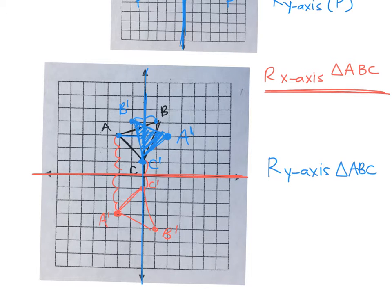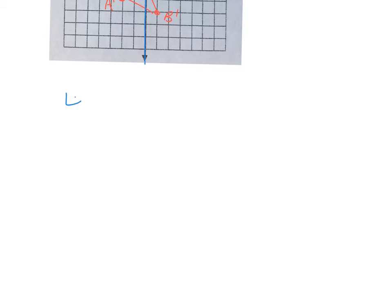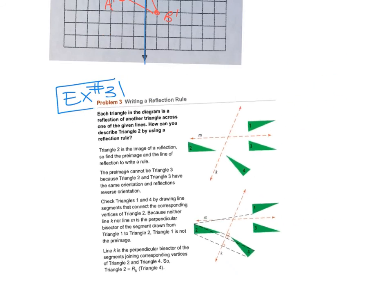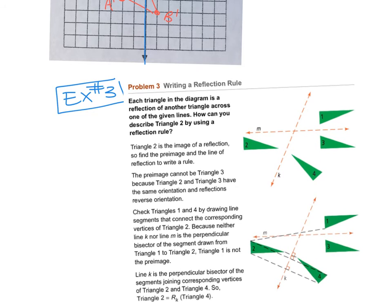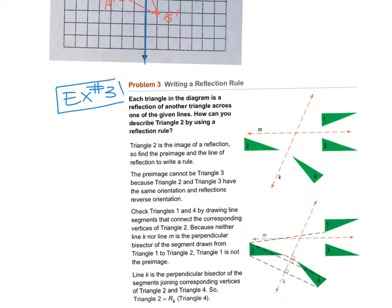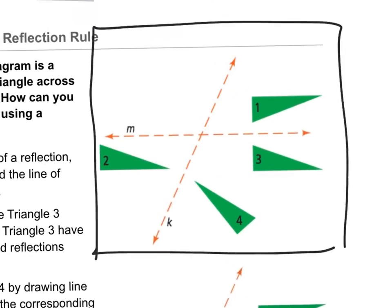Example three here. This is straight out of the book because they do a much better job of drawing the picture for me. But if you look at this picture here, do you see a reflection image for triangle two? No. Does this help? Oh. Yeah.